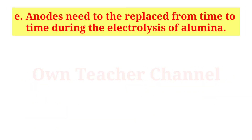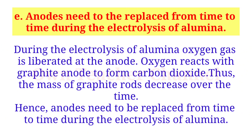Anodes need to be replaced from time to time during the electrolysis of alumina. During the electrolysis of alumina, oxygen gas is liberated at the anode. This oxygen reacts with the graphite anode to form carbon dioxide, and thus the mass of the graphite rods decreases over time. Hence, anodes need to be replaced from time to time during the electrolysis of alumina.